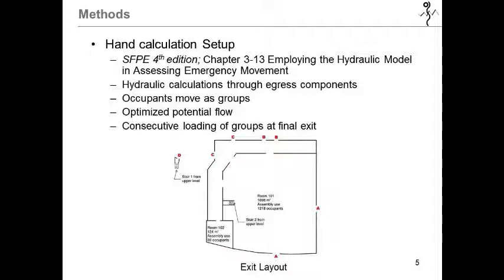For this scenario, it was dominated by restrictive elements. For example, there was consecutive loading where room 102 was able to reach exit C before the occupants from room 101 were able to traverse through the exits.